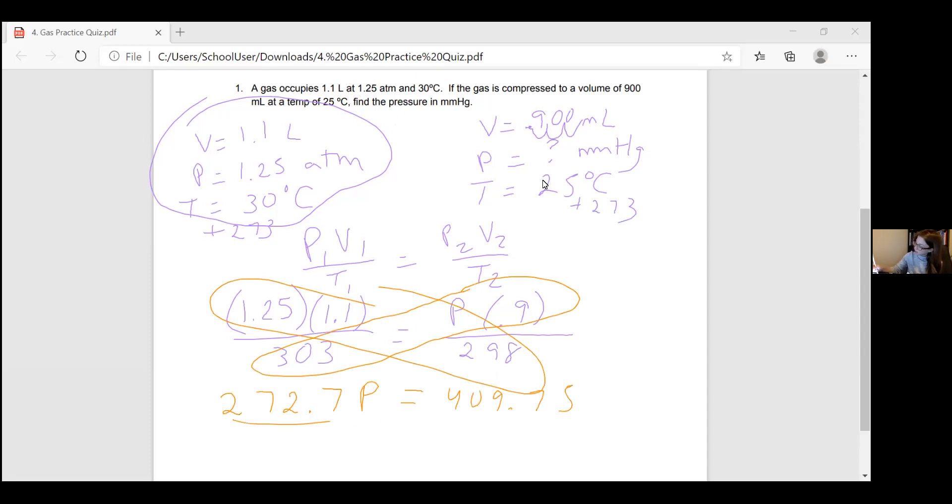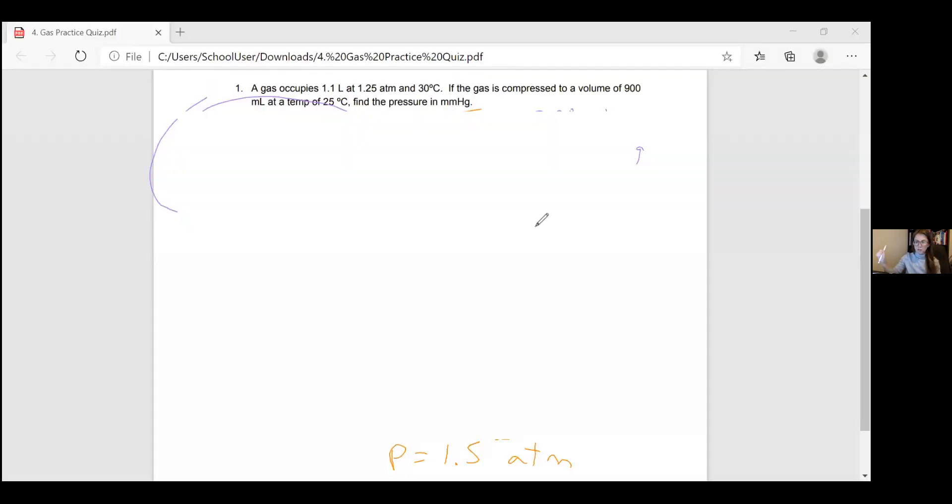I'm trying to get the pressure by itself, so I want to divide by that 272 number. And I get that my pressure is going to be 1.5, but again, it's atm because I plugged in atm previously. And the question wants the pressure in millimeters of mercury.